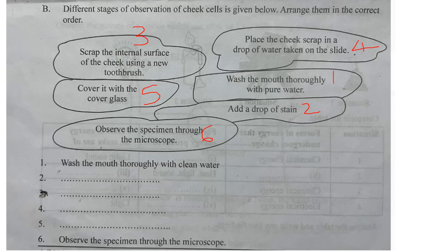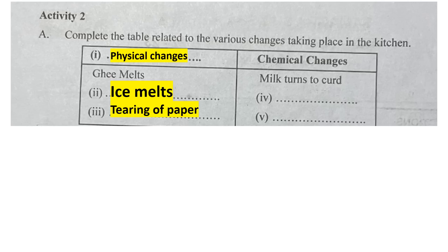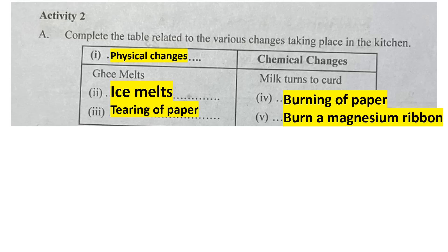Complete Activity 2: complete the table related to the various changes that take place in the kitchen. Physical changes: ghee melts, ice melts, tearing of paper. Chemical changes: milk turns into curd, burning of paper, burning of a magnesium ribbon.